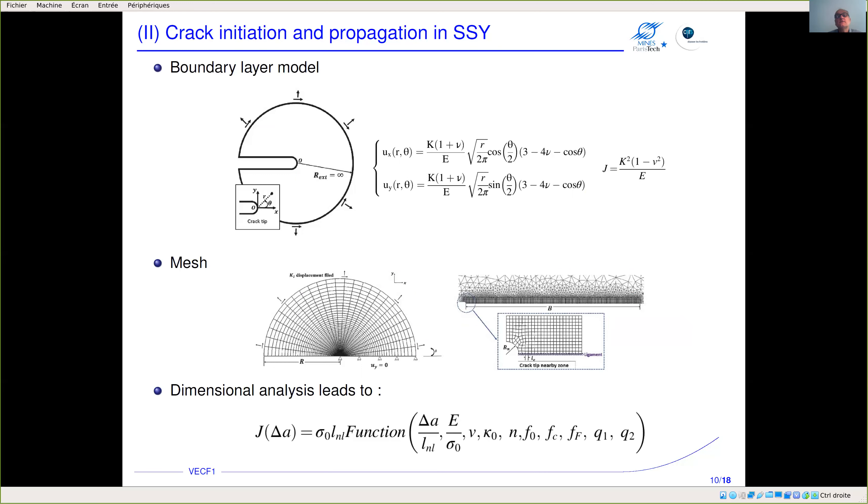This model was applied to crack initiation and propagation in the case of small scale yielding. To do that we use the boundary layer model. Here we have a crack at the center of a very large disk. At the boundary of the disk we impose the displacement corresponding to Williams conditions, and parameter J can be computed from the stress intensity factor using Irwin's formula. Here is an example of the mesh we are using—the overall mesh and here is a zoom on the notch and the crack path.